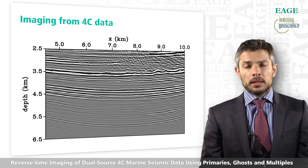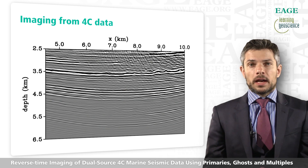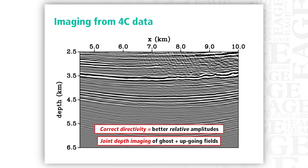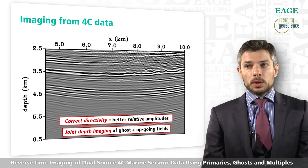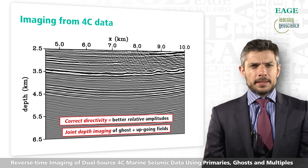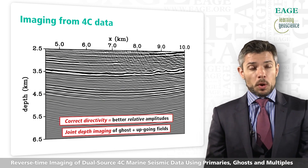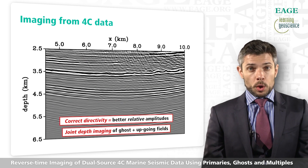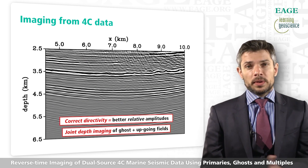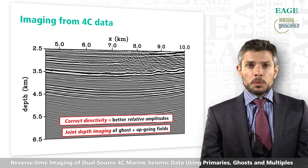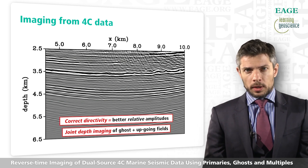The take-home message of this talk is that using the full vector information in the data allows us to account for directivity in a finite frequency sense, which translates into better relative amplitudes in our final images. Additionally, because we're using the full vector information, we'll be performing joint depth imaging of both the ghost fields and up-going fields in 3D. In other words, there's no need to perform de-ghosting prior to imaging.